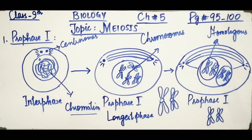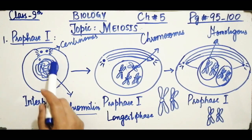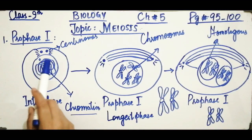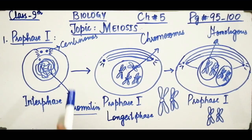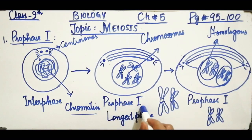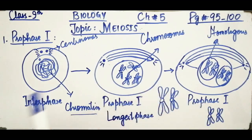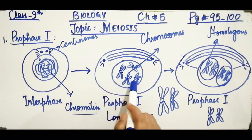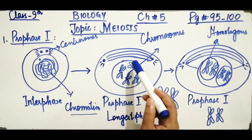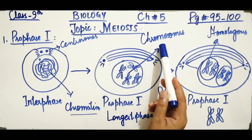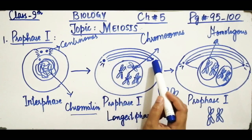To summarize Prophase I: in the interphase, the nucleus has a prominent nuclear envelope and chromatin in loose thread-like form, with centrosomes visible. In Prophase I, the loose thread-like chromatin structures condense into highly ordered chromosomes. Formation of spindle fibers is also observed during this stage.